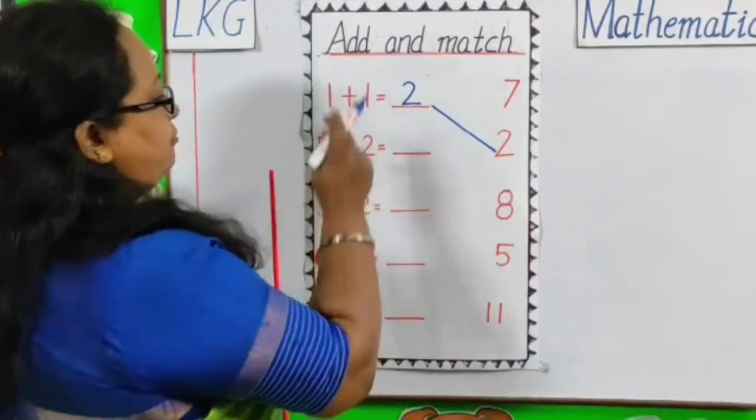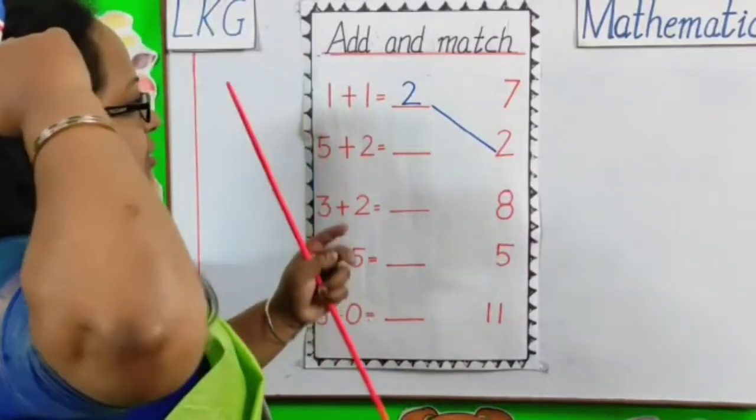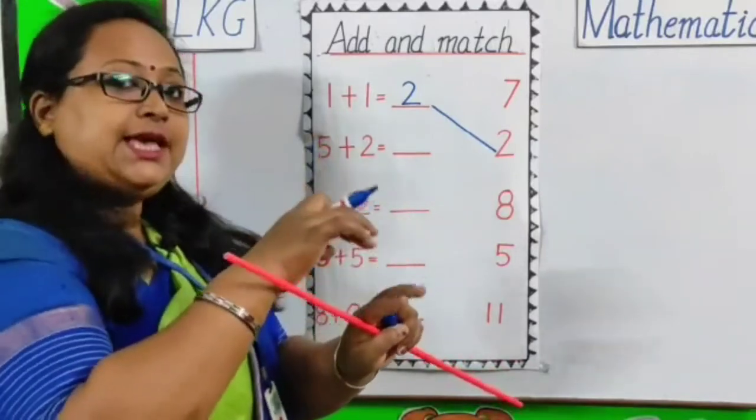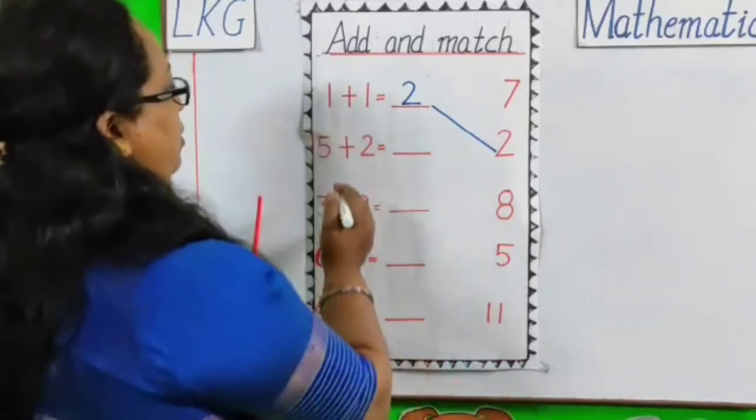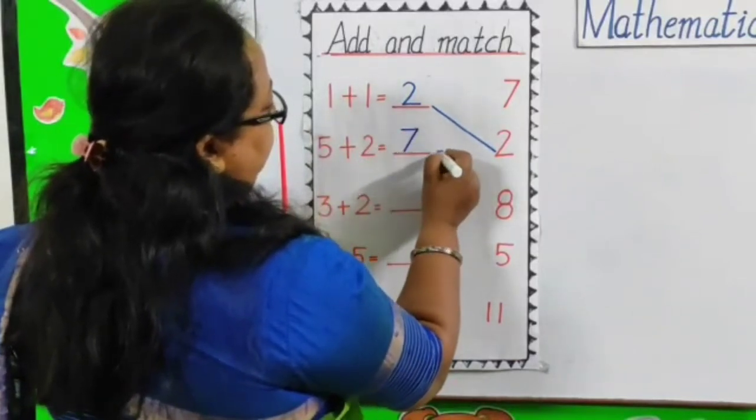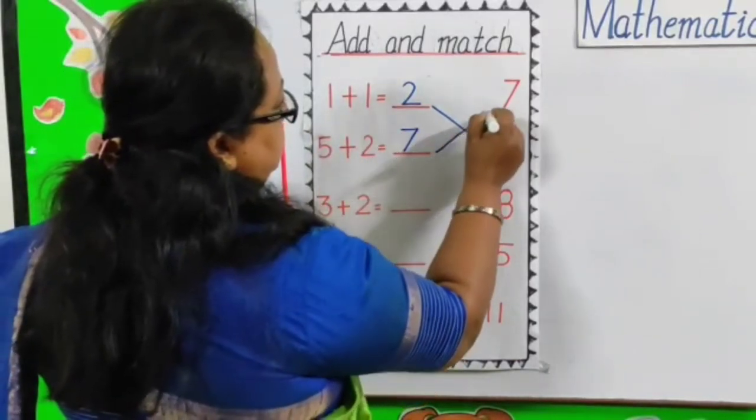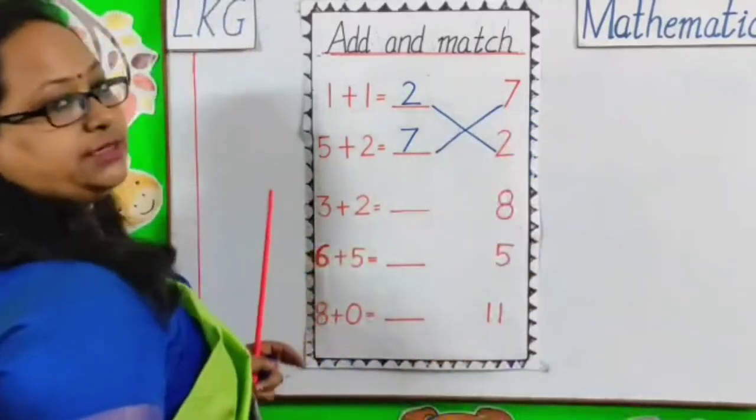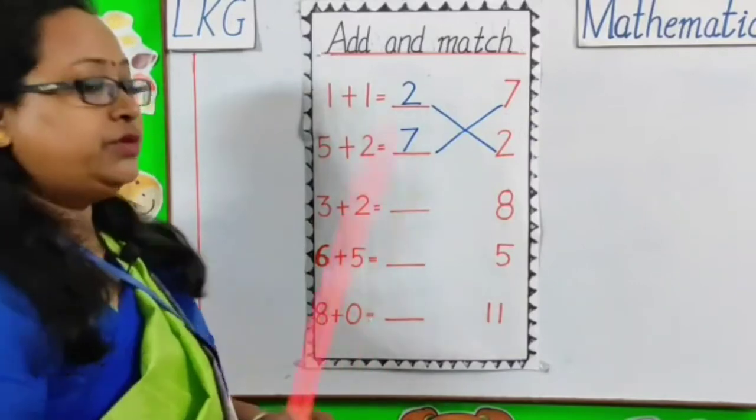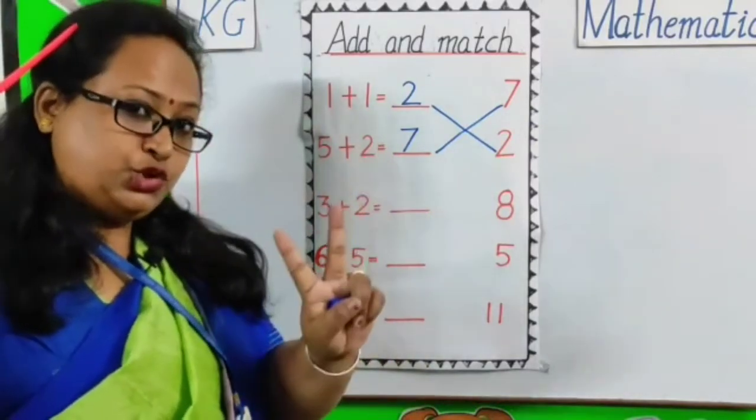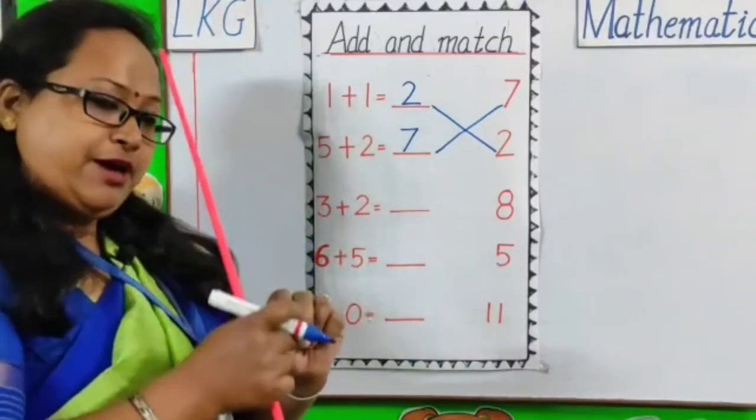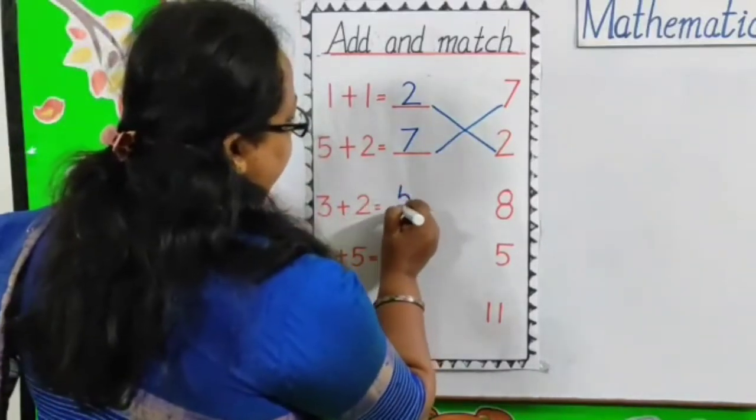Next. 5 plus 2. 5 after 5, 6 and 7. So, answer is 7. And, we have to match to the correct answer. Next question is 3 plus 2. 3 plus 2. After 3, 4, 5. Answer is 5.